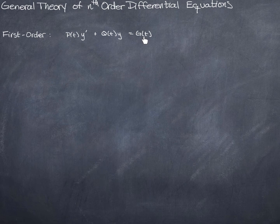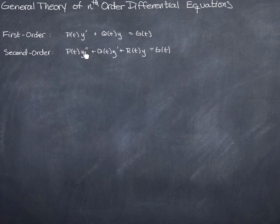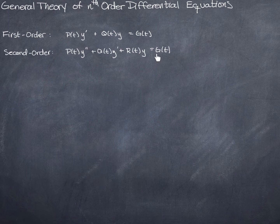If the right-hand side is 0, we call this a homogeneous equation. A second order equation looks like this: the highest derivative is the second derivative. There's a first derivative term and a zeroth derivative term, each with a function of t in front of it, and a function of t on the right-hand side. These functions of t can be 0.